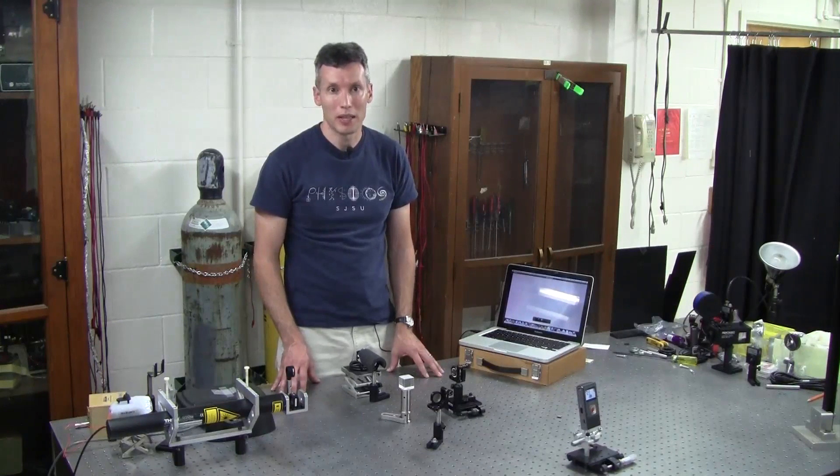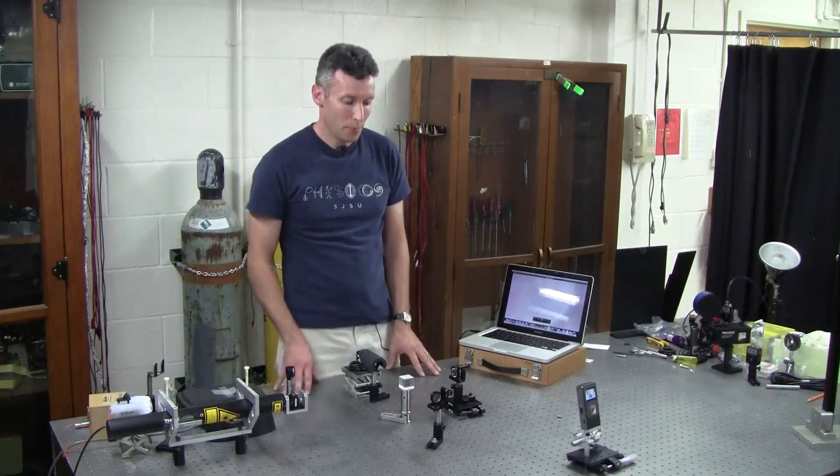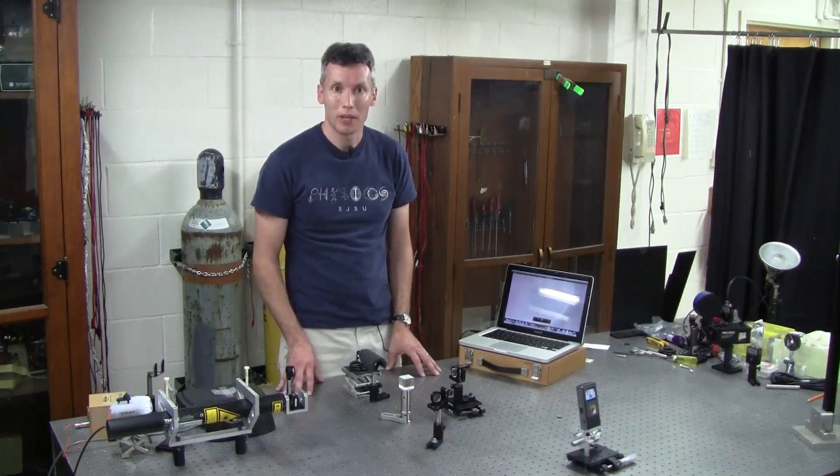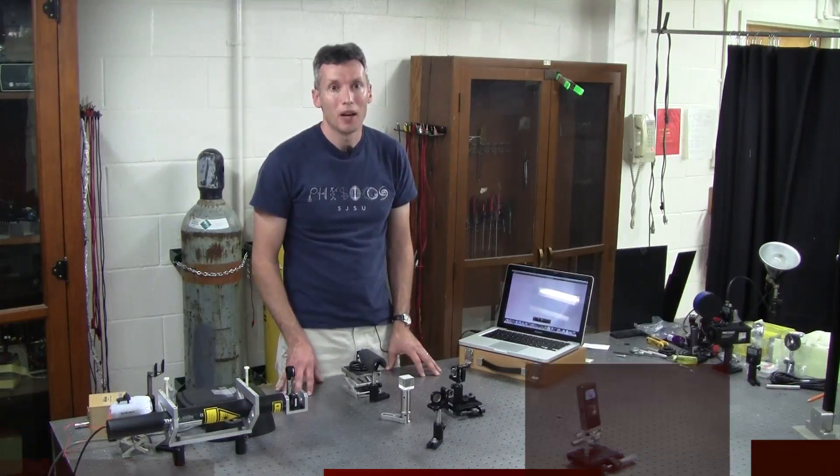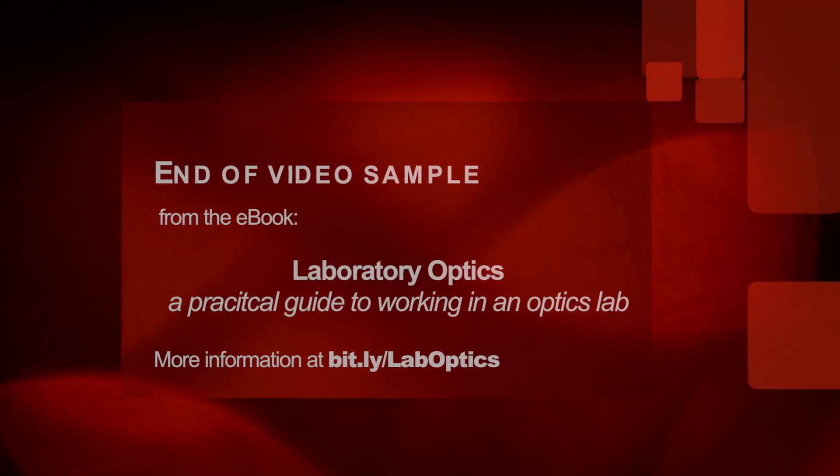Because the HeNe laser has a long coherence length, I can roughly position the mirrors so that they're equidistant from the beam splitter, adjust the alignment of the mirrors the way I would with a typical Michelson interferometer.